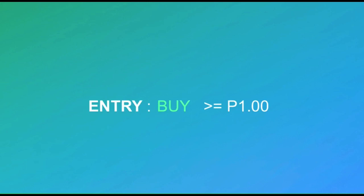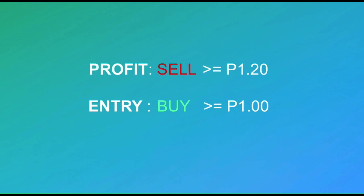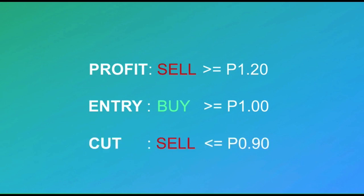We're going to be setting up three orders. First is our entry target to buy on breakout if the price goes above one peso. Next is our profit target to sell all our shares if the stock goes above one peso and 20 centavos. And finally, we're going to be setting up our cut loss target in case the stock falls below 90 centavos.